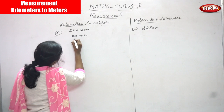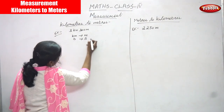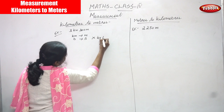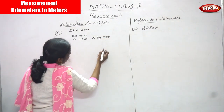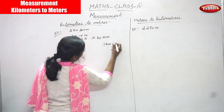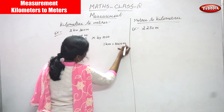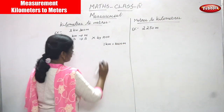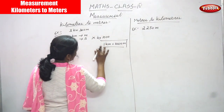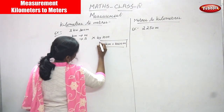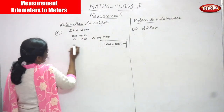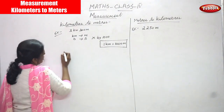Kilometer is a bigger unit and meter is a smaller unit. That means multiply by thousand. The formula is: 1 kilometer is equal to 1000 meters. So don't forget this formula, otherwise you can't do the sum.